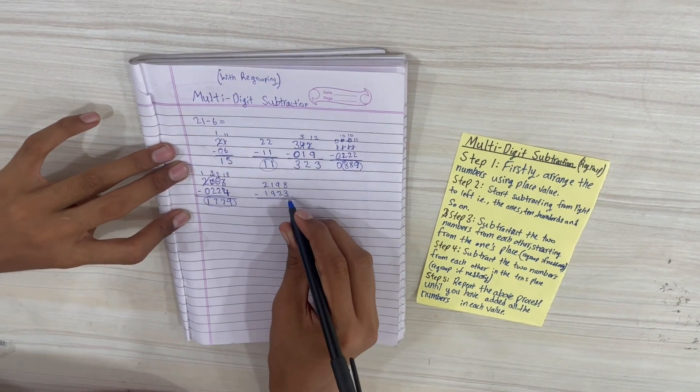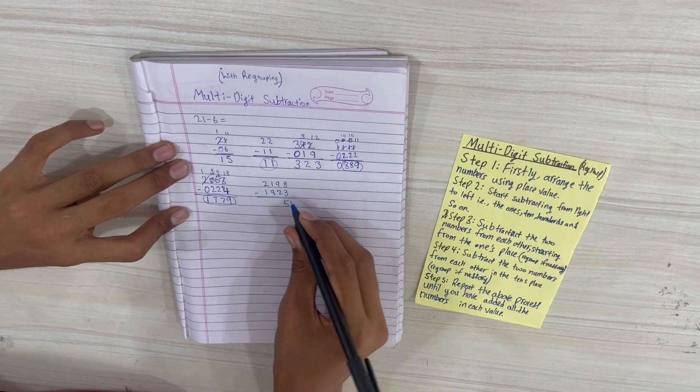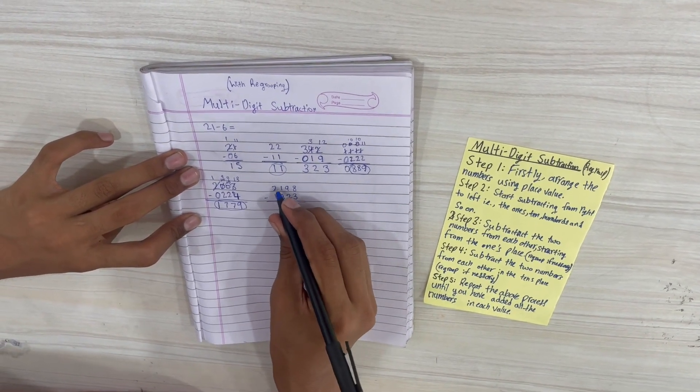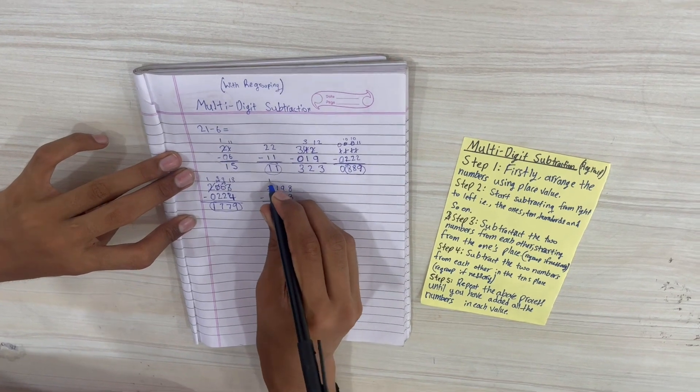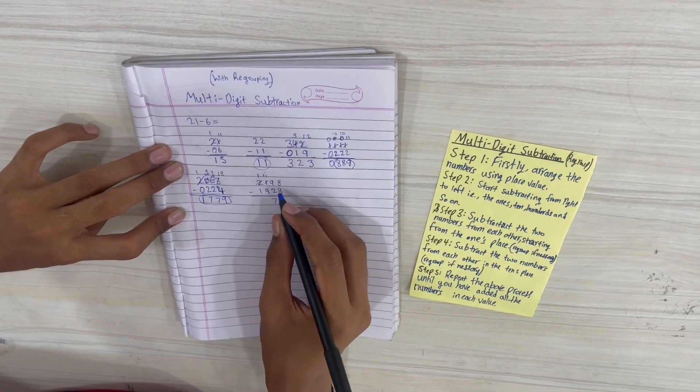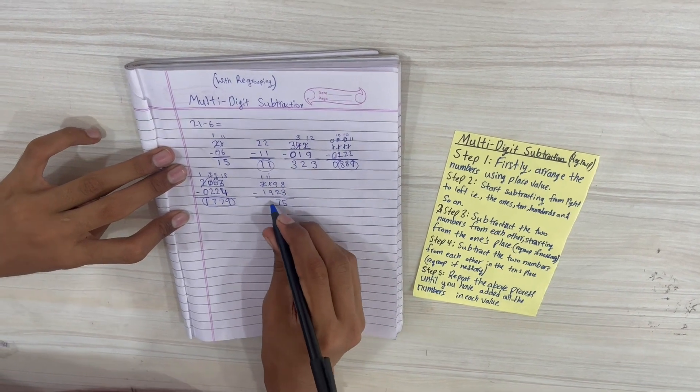Subtracting from the right: 8 minus 3 is equal to 5. 9 minus 2 is equal to 7. We cannot subtract 9 from 1, so we'll move over, make this 11 as 10 plus 1 is equal to 11, and 11 minus 9 is equal to 2. 1 minus 1 is equal to 0, and the answer is 275.